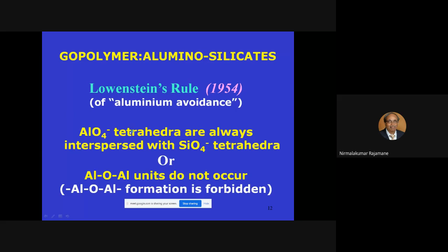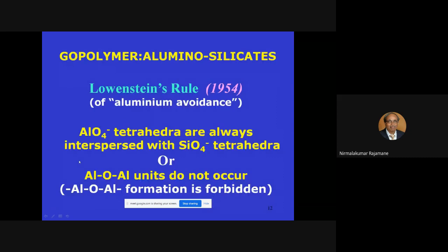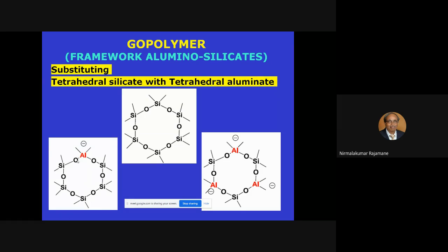Silicon and aluminum do not join directly — they join only through oxygen. This is the Lewenstein rule. Please don't think I am talking pure chemistry here; I want to approach it from the materials science side, making it a little more fundamental for engineers.